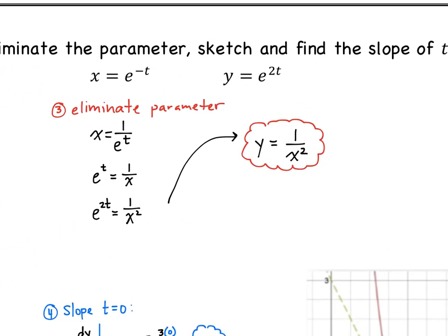Now we eliminate the parameter, meaning we need our equation in terms of x and y only. Since y involves e^(2t), we solve for e^t from the x equation. Since x = e^(−t), we have e^t = 1/x, and squaring both sides gives e^(2t) = 1/x². Substituting directly into y = e^(2t), we eliminate the parameter and get y = 1/x².